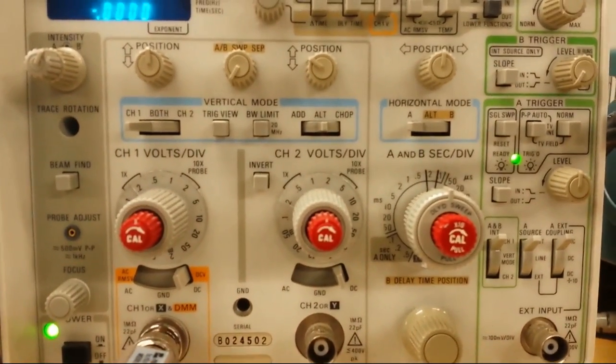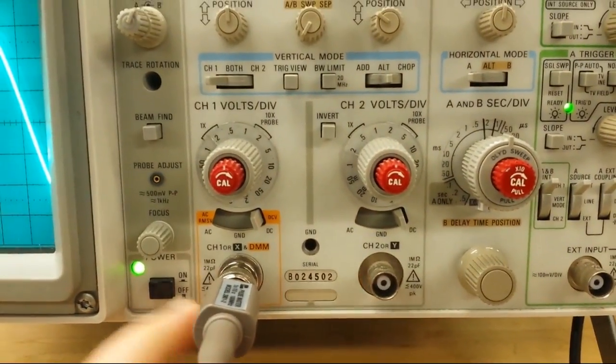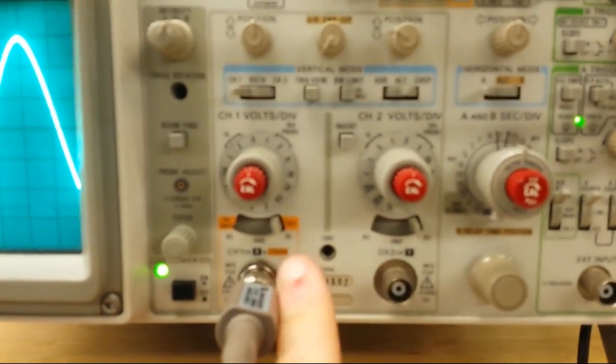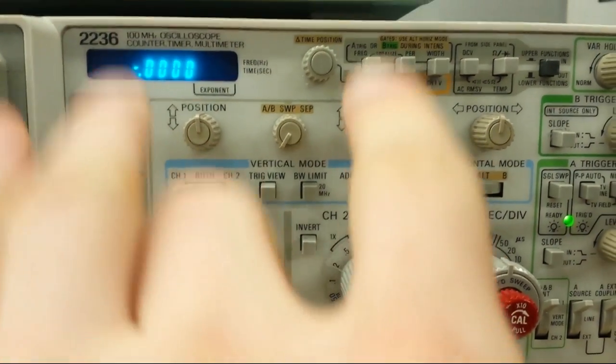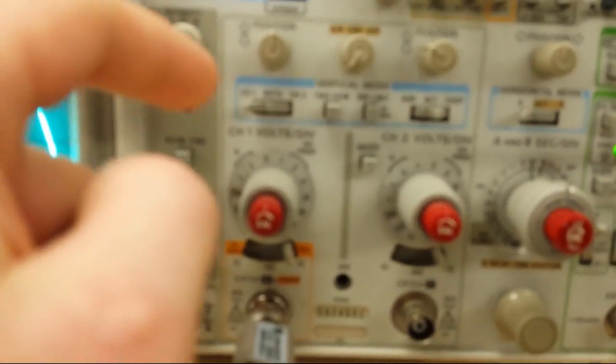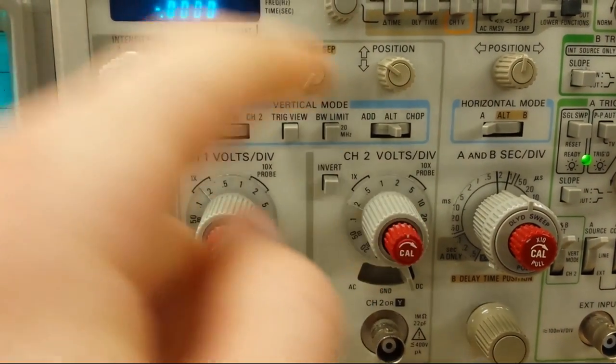Now, the other main function is you'll see that there's two channels here. Now, we're only using the one, but you can have two. And you can see that there's controls for both channels. So this and this are the same thing. The only difference is this works for channel one, this works for channel two. Same with these knobs up here.